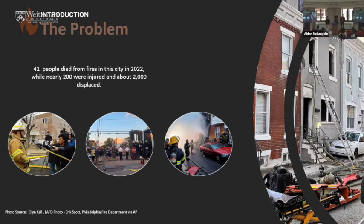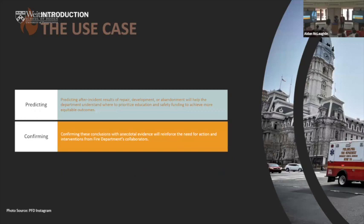In 2022 there were 1.2 million structural fires across the country. Last year, major cities like Philadelphia and New York City were grappling with severe and deadly structural fires. Specifically in Philadelphia, 41 individuals lost their lives, 200 were injured, and 2,000 were displaced. The Philadelphia Fire Department came to us expressing a desire to learn about the social and economic consequences of fire incidents in the city — to better inform strategic thinking and programming around fire prevention and fire recovery patterns.